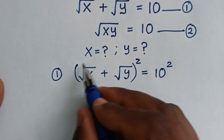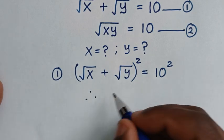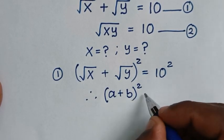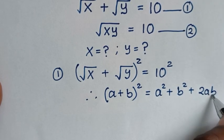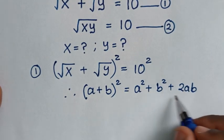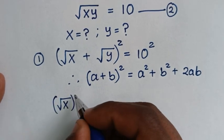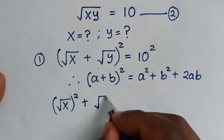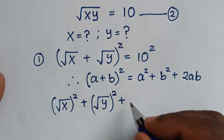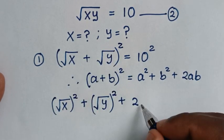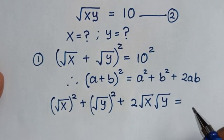On the left side, we apply the algebraic rule for (a + b)², which equals a² + b² + 2ab. Applying this: a² gives (√x)², b² gives (√y)², and 2ab gives 2·√x·√y. On the right side, 10² = 100. So we have (√x)² + (√y)² + 2·√x·√y = 100.